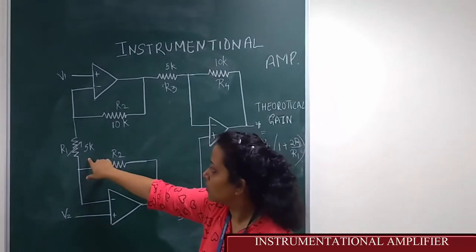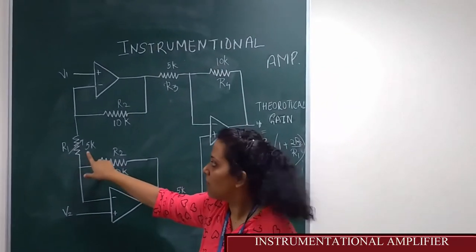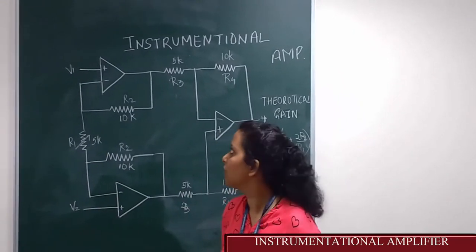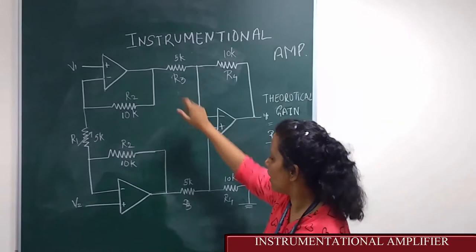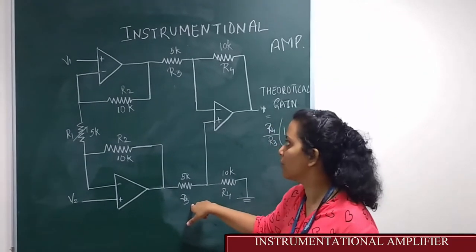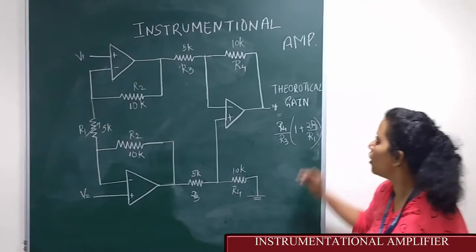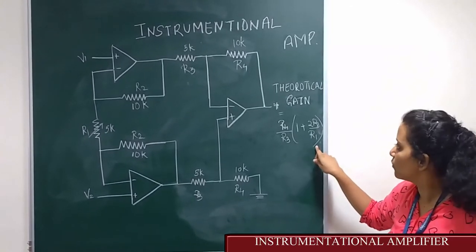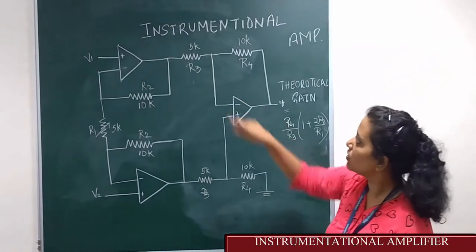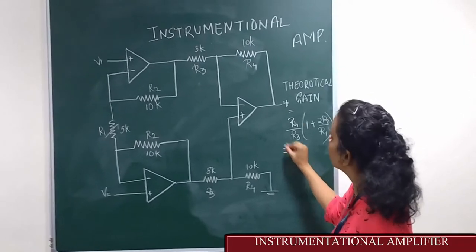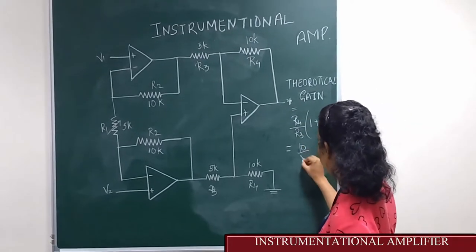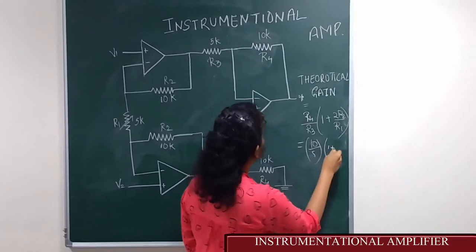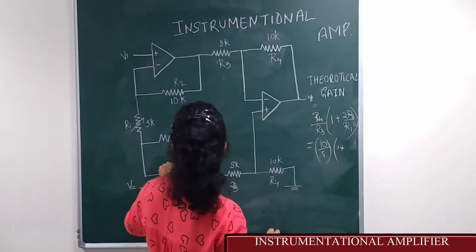Now R1 is a variable resistance. We are using three different types of resistance: 5k, 10k, and 15k. And this value is 5k, which is R3. We all know the formula for theoretical gain is R4 by R3 into 1 plus 2 R2 by R1. Now from the circuit, we can see that R4 by R3 is 10 by 5, and R2 by R1 is 10 by 5.